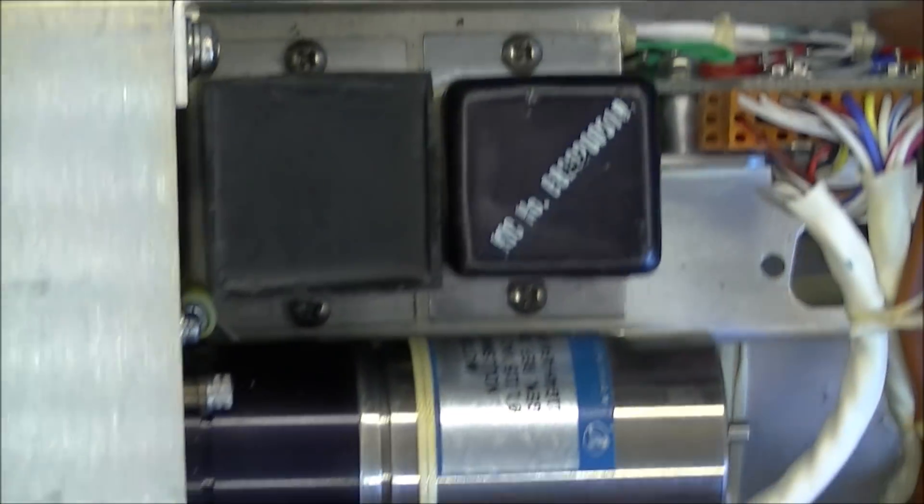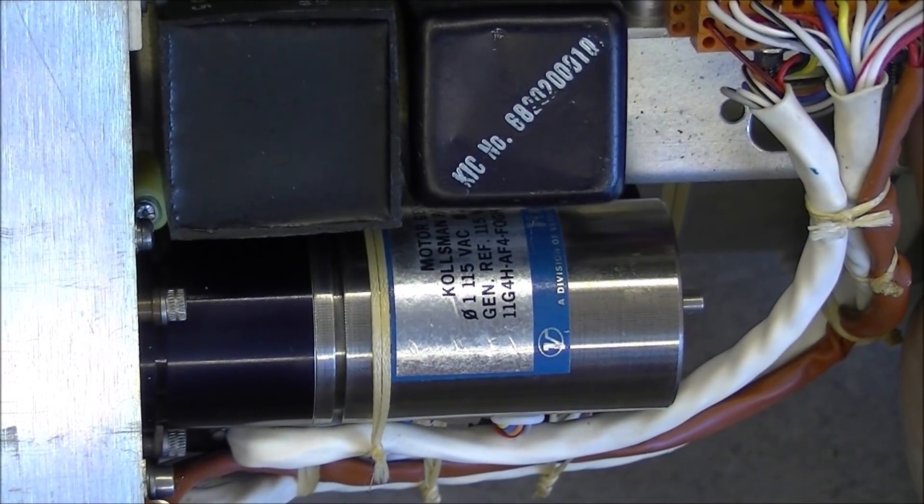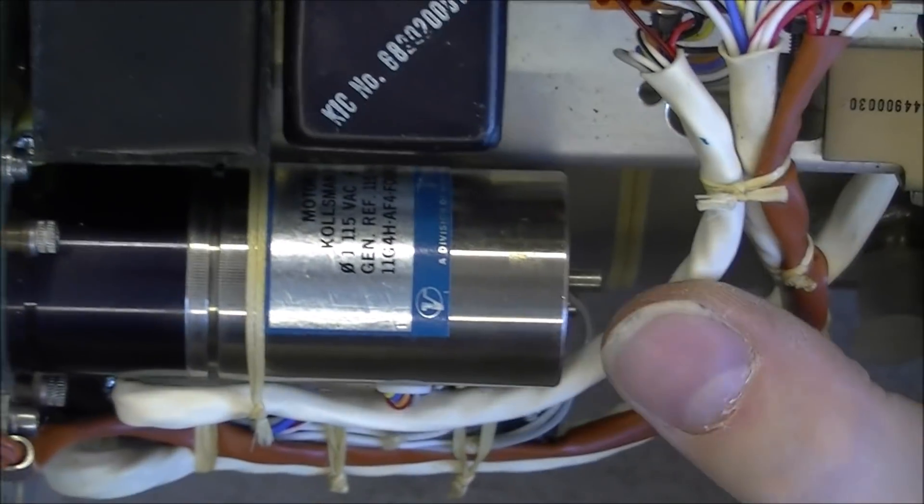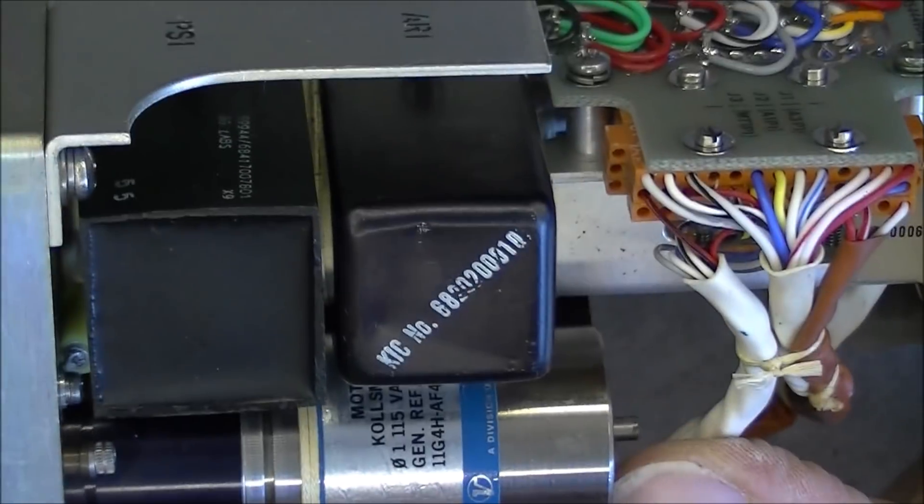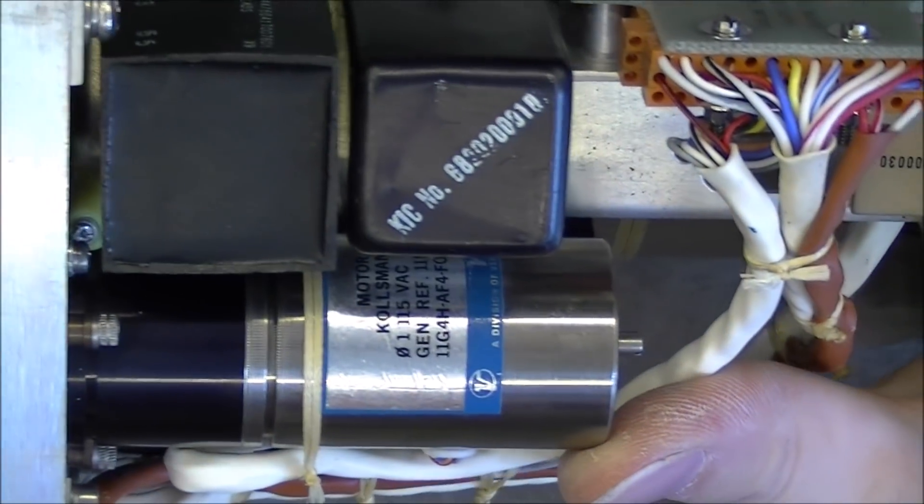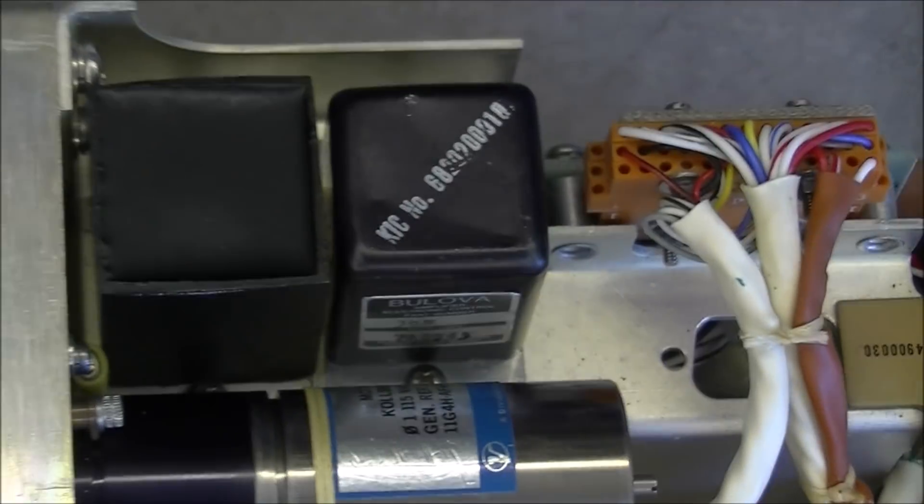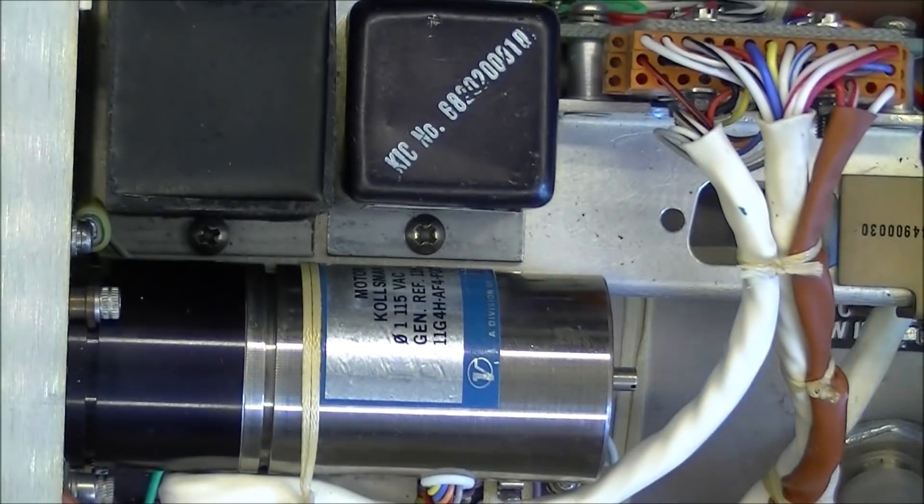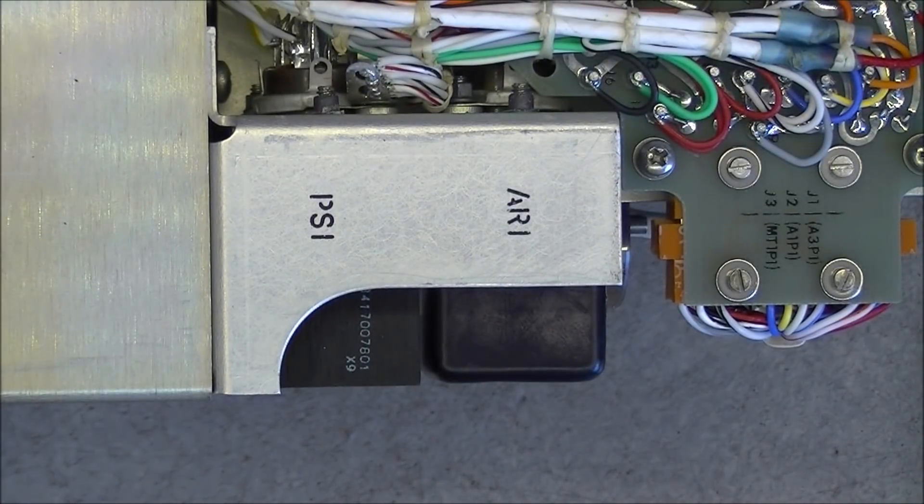Here we have something else. Motor something, Koltzmann. Motor generator it is written. And here we have two little boxes that I will be able to undo because it seems they are socketed. So let me undo the screws and I will be right back.